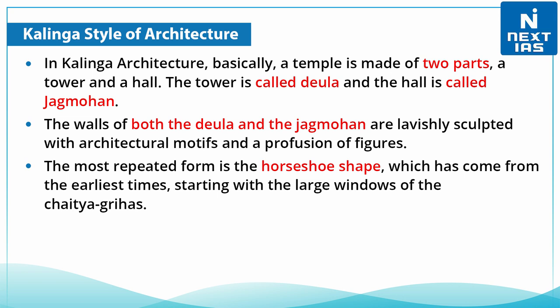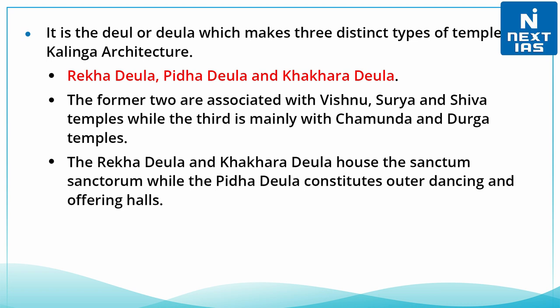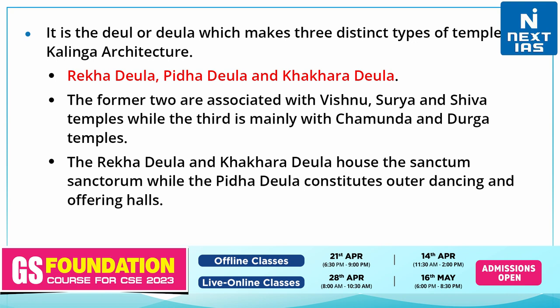The most repeated form is the horseshoe shape, which has come from the earliest times, starting with the large windows of the Chetigrihas. It is the Deula style which makes three distinct types of temples in Kalinga architecture: the Rekha Deula, the Pidha Deula, and the Khakra Deula.